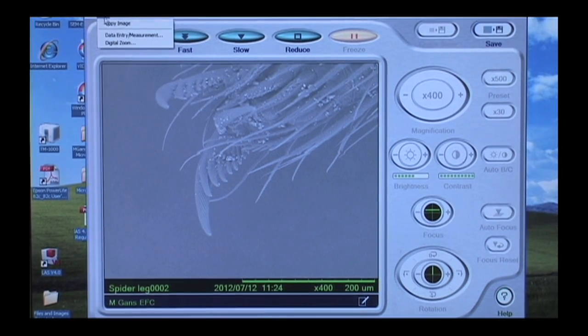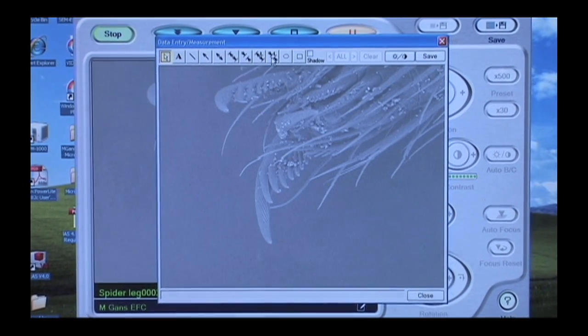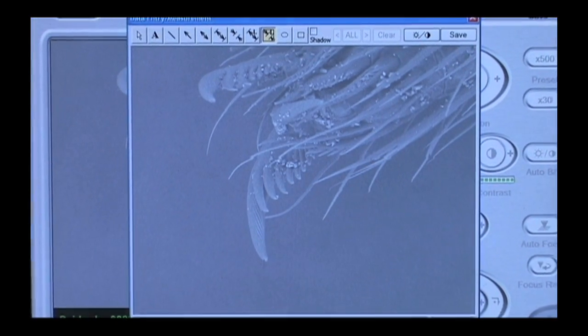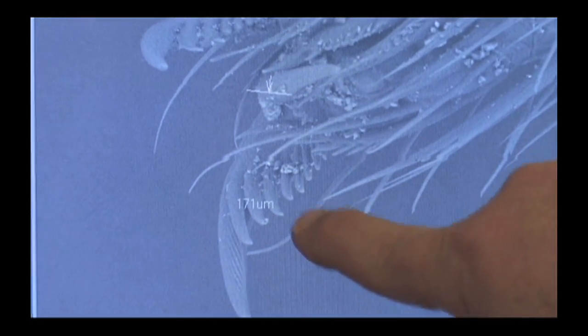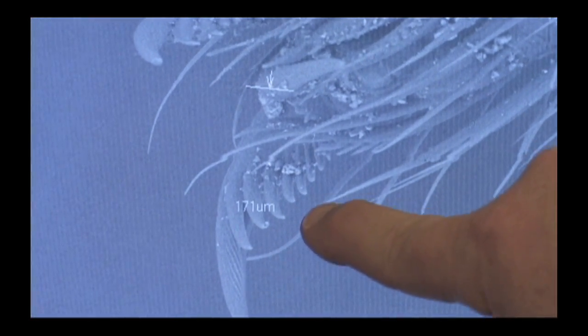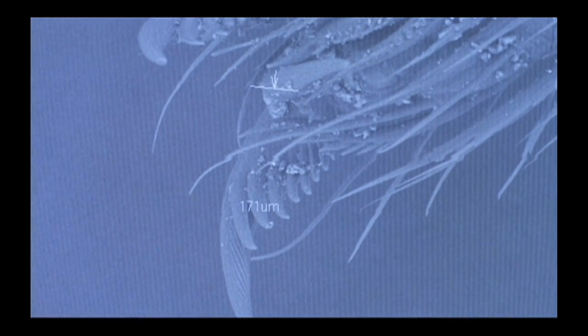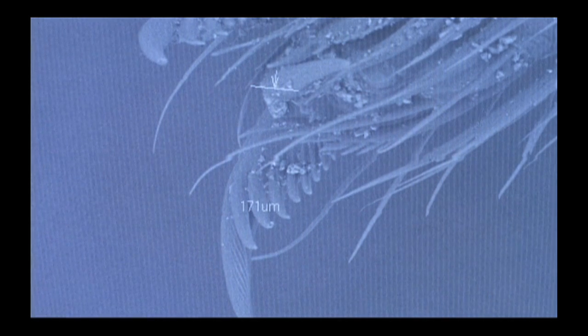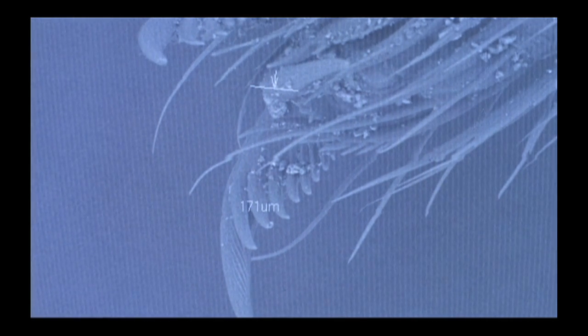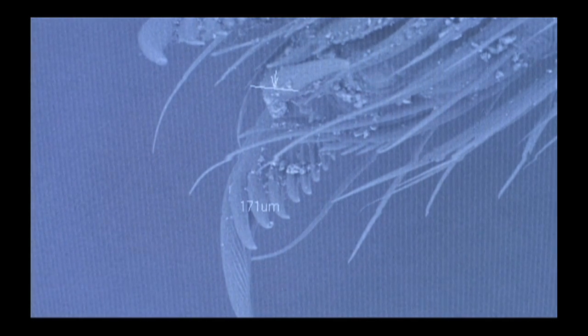Under the edit menu here, I can make measurements. So I'm going to click on this icon right here, and I'm going to measure the length of that spider's claw. Just drag and let go. And this tells me that that claw is 171 microns long. If you recall, a centimeter is one one-hundredth of a meter, a millimeter is one one-thousandth of a meter. We're talking about a micron, which is one one-millionth of a meter. This is 175 microns.